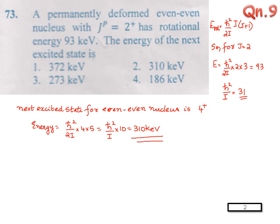Question number 9. A permanently deformed even-even nucleus with J^π = 2⁺ has rotational energy 93 KeV. The energy of the next excited state is, we know, energy for rotation is equal to ℏ² by 2I, J into J plus 1. For J equal to 2, E is equal to 93. So we get ℏ² by I equal to 31.